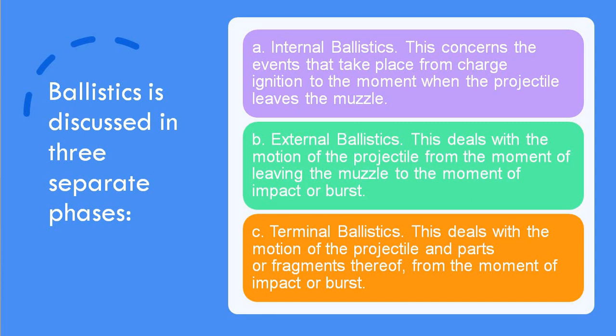External ballistics deals with the motion of the projectile from the moment it is outside the muzzle end, travelling through the air until it reaches the target — in this case it can be a person. Terminal ballistics deals with the motion of the projectile and the fragmentation upon impact, so basically the different effects that happen on the person after the bullet has impacted them.